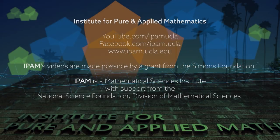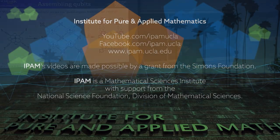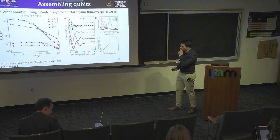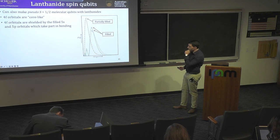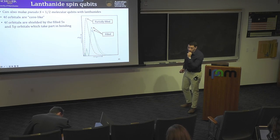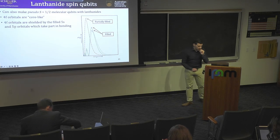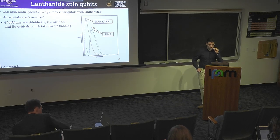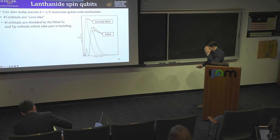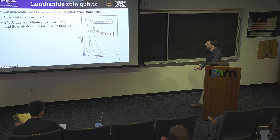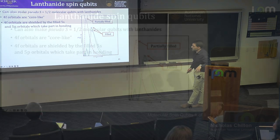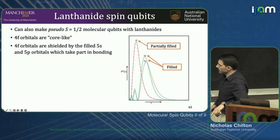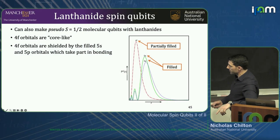Where do we leave off? We left off at the end of making some lovely arrays of qubits and things, which is all well and jolly. There are other kinds of qubits as well — you can not just want to do spin-1/2 qubits, but you can make pseudo spin-1/2 molecular qubits using lanthanides.